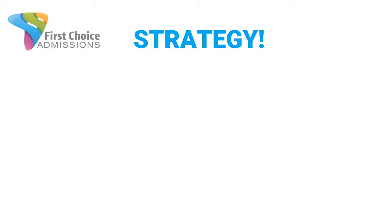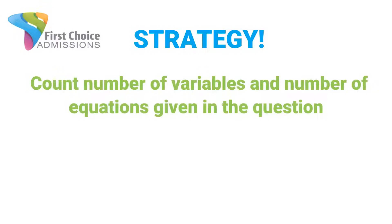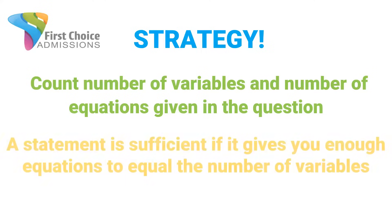Anytime the GMAT asks you a data sufficiency question that requires a specific value for a specific variable, here's what I want you to do: count the number of variables and the number of equations they give you in the question stem. There will always be more variables than equations. Then look at each individual statement — a statement will be sufficient if it gives you enough equations to equal the number of variables.